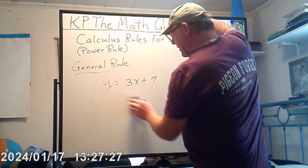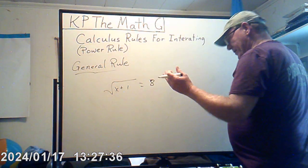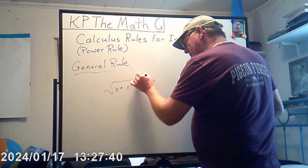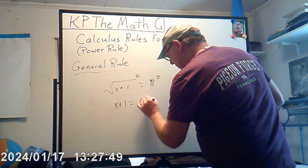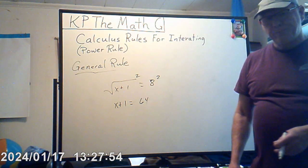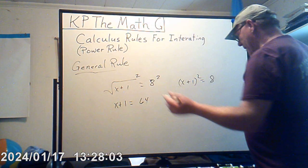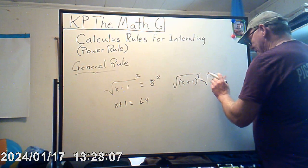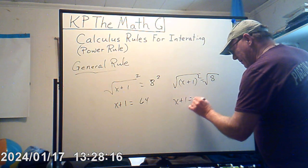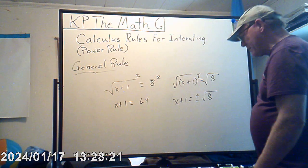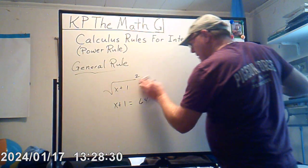Similarly, if I have the square root of x plus 1 equals 8, I get rid of the square root by squaring both sides, giving x plus 1 equals 64. Or if I have x plus 1 squared equals 9, I take the square root of both sides, giving x plus 1 equals plus or minus 3. That's the same idea behind the derivative and the anti-derivative.